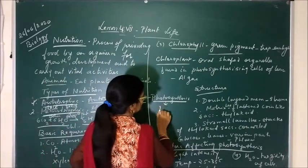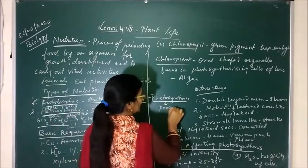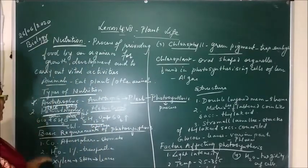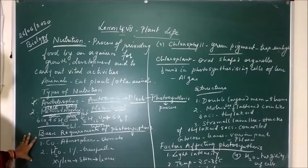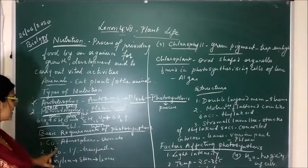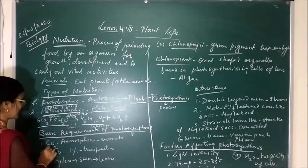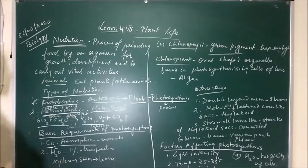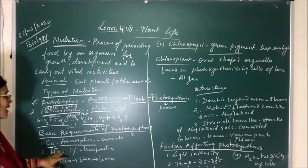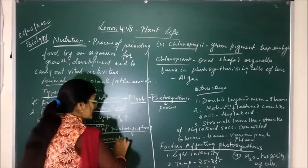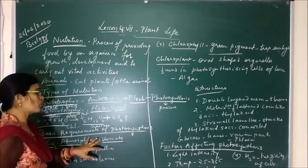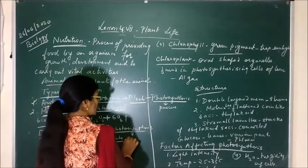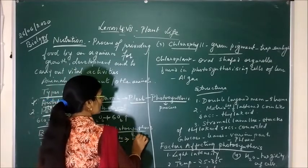Photosynthesis is a process in which food is prepared by green plants in the presence of sunlight, water, carbon dioxide, and chlorophyll. The basic requirements of photosynthesis are: first, carbon dioxide. Plants get carbon dioxide from the atmosphere through small pores or openings present on the under surface of the leaves, called stomata. This carbon dioxide is absorbed by the process of diffusion.